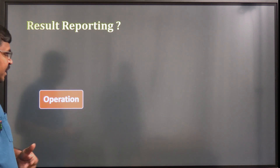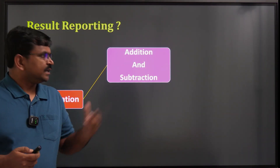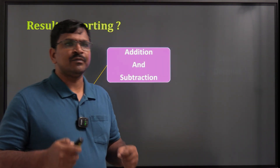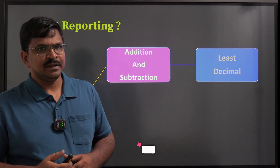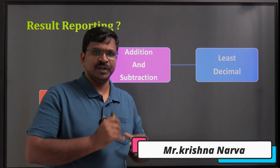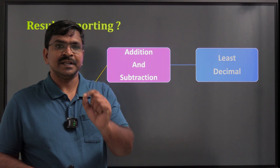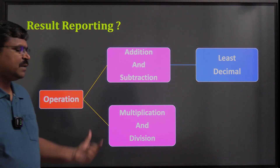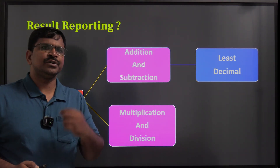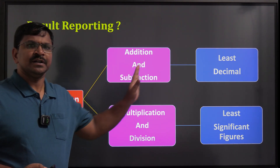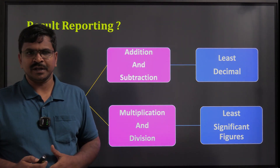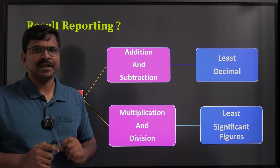When should we do rounding off, why should we do it, and how should we do it? Whenever the mathematical operation between measurements is addition or subtraction, the result should be rounded off to the least decimal. For example, 2.3 plus 6.56 — the first addend has one decimal, the second has two, so the result must follow the least decimal, which is one. In multiplication and division, the result should be rounded off to the least significant figure.